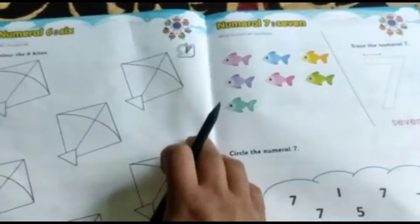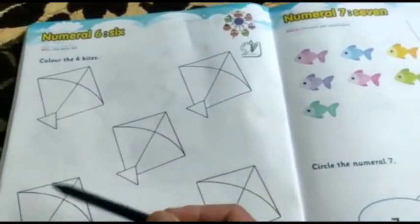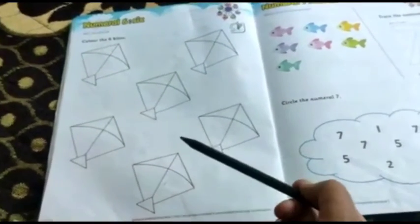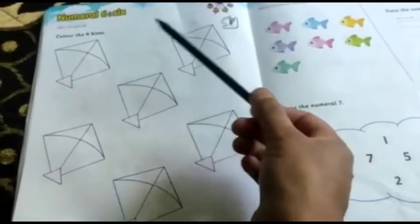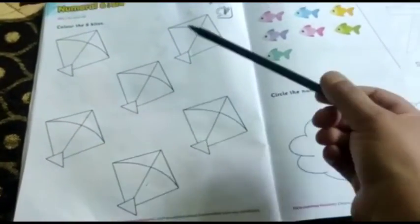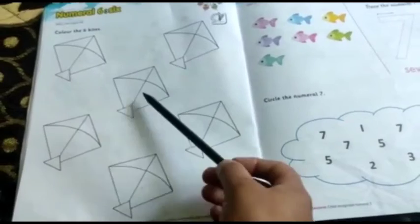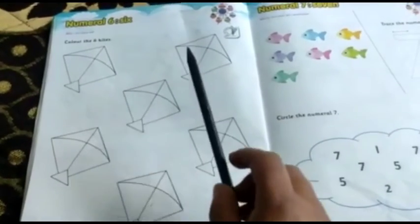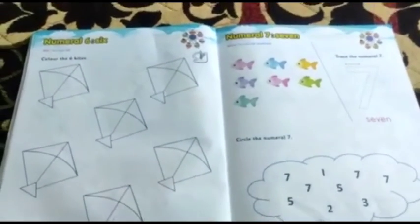Now, on the basis of numeral 6, we have an activity given. What is numeral 6? Color the 6 kites. Here we have 6 kites. 1, 2, 3, 4, 5, 6. There are 6 kites here. We have to color any color. It is up to you. I will say that you will color each one a different color. How many are? 1, 2, 3, 4, 5, 6. There are 6 kites. This is numeral 6. There are 6 kites. We have to color each one.